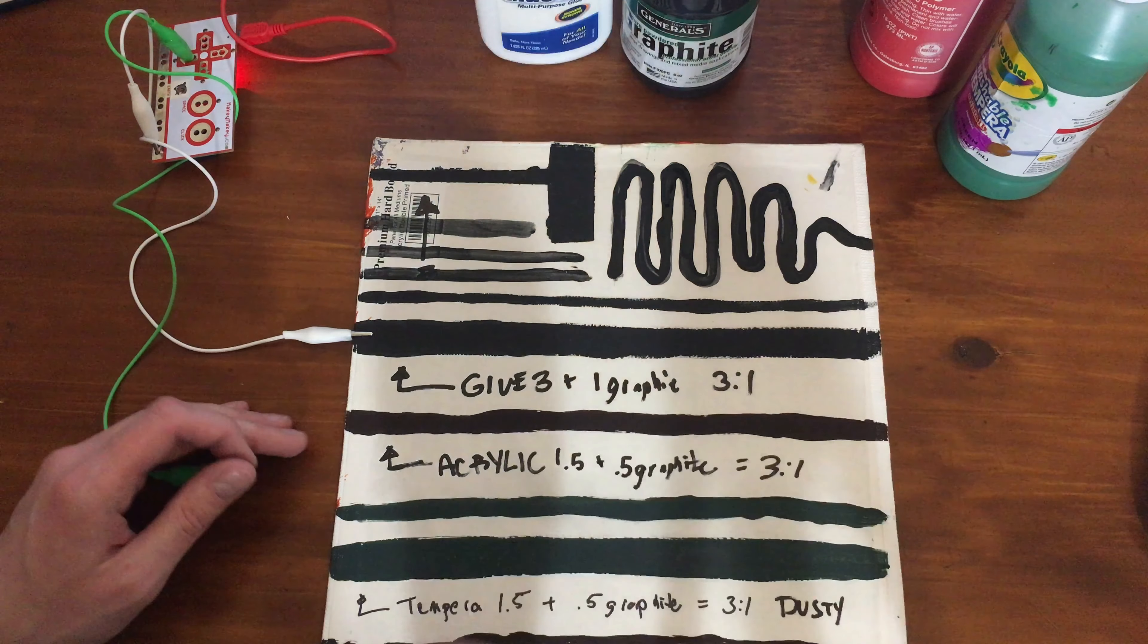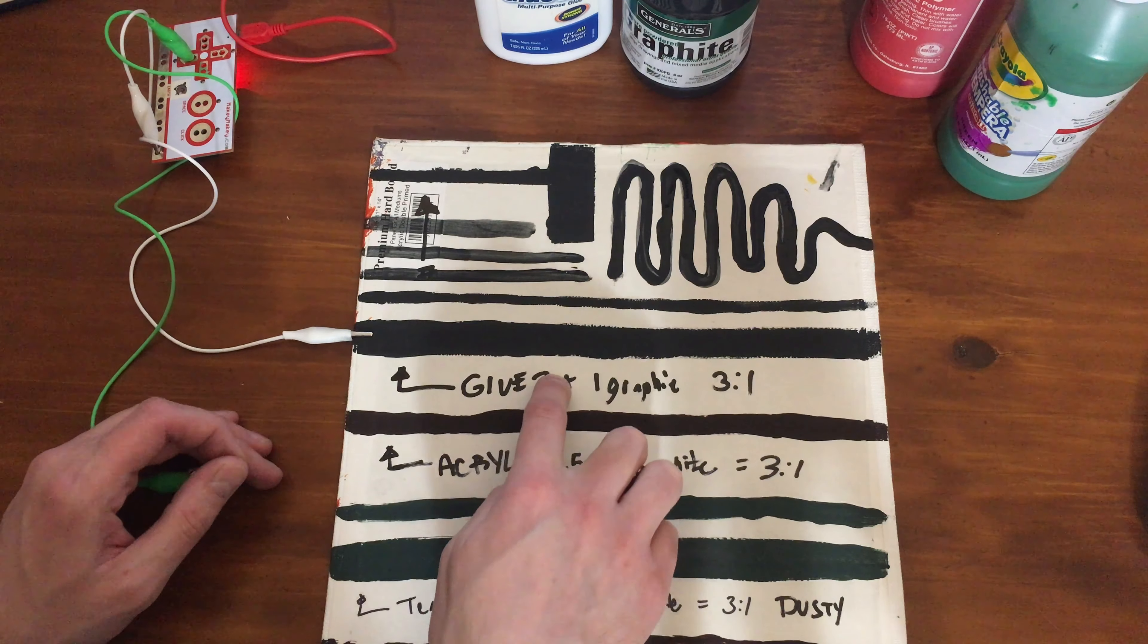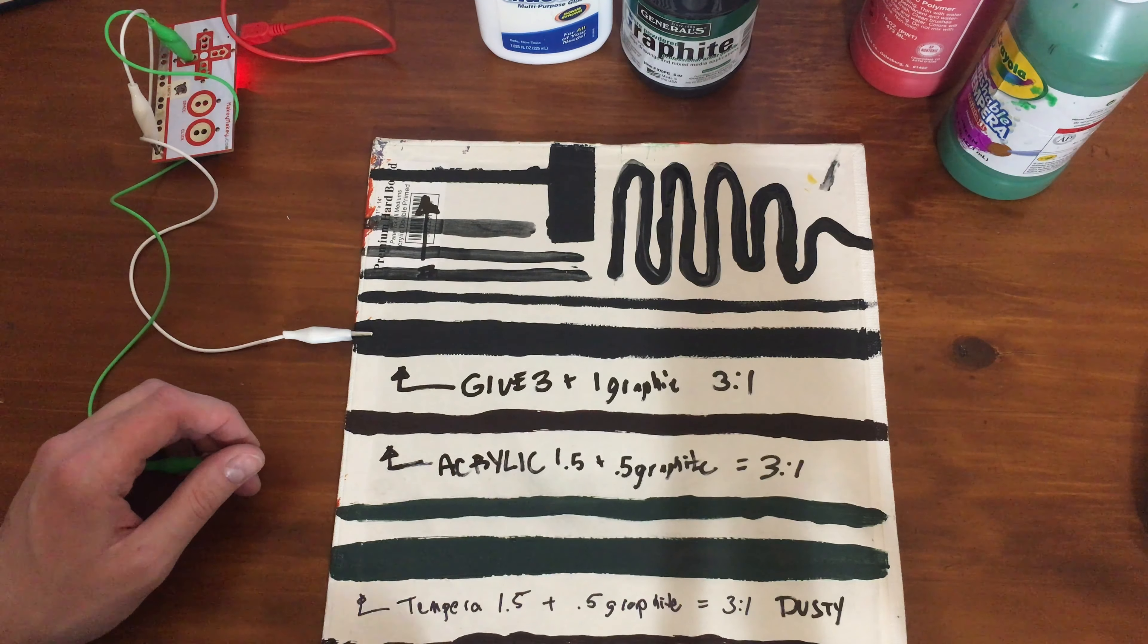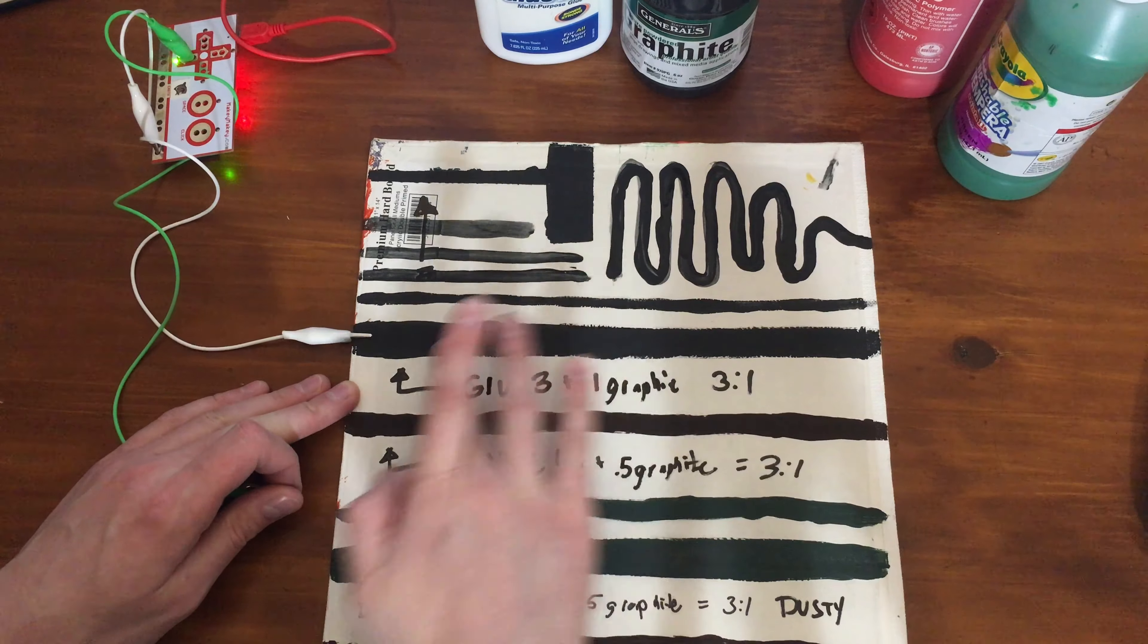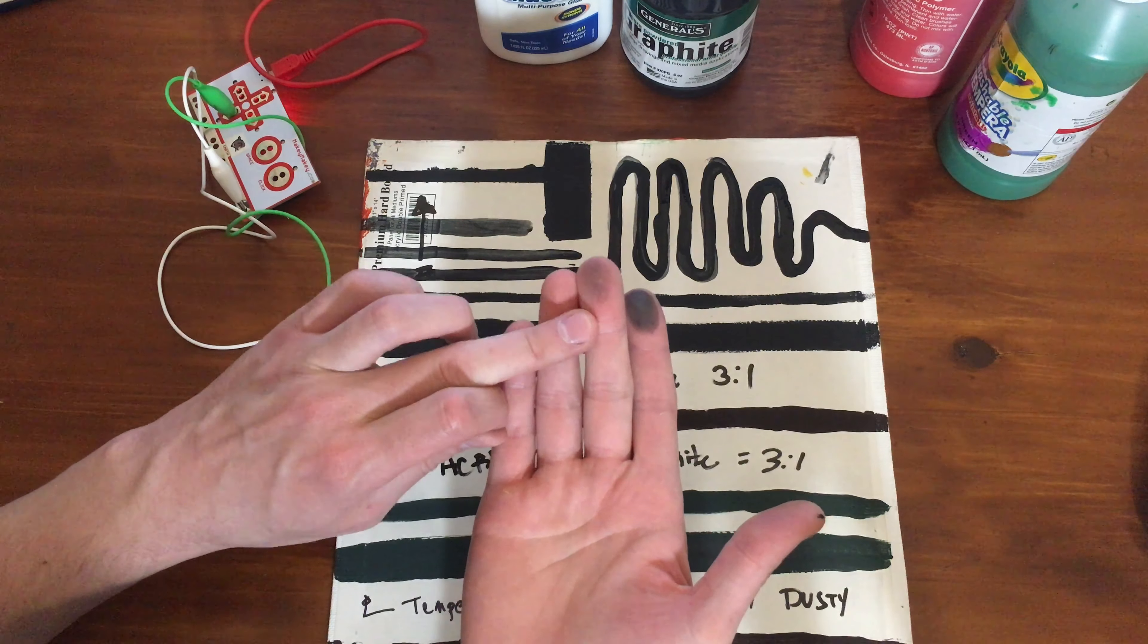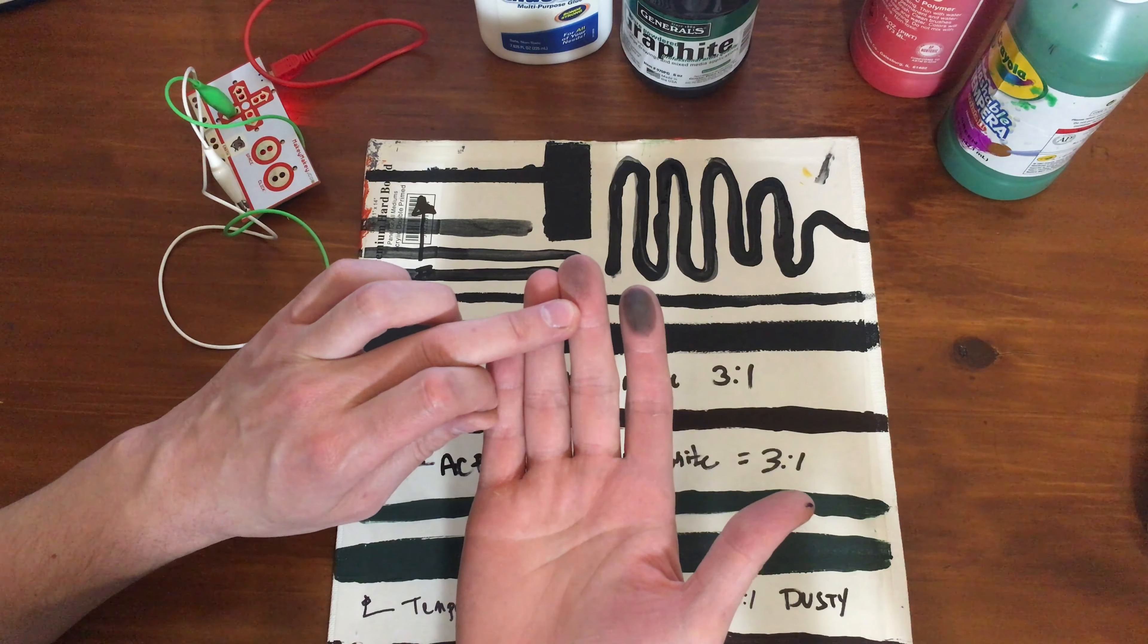That's it. My conclusion, glue three to one was the best mixture to make conductive paint. And the best part is it doesn't rub off as easy. It doesn't give off the graphite as easy.